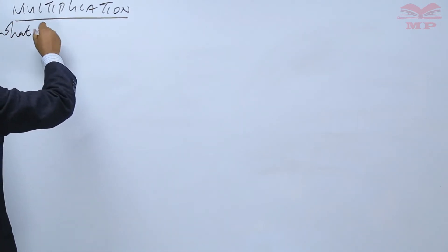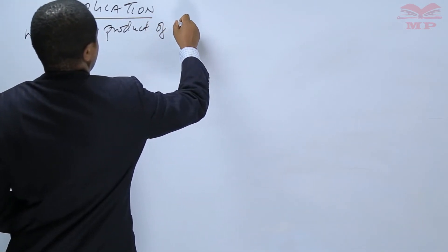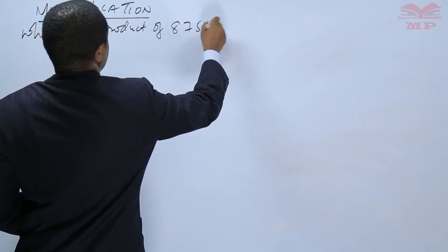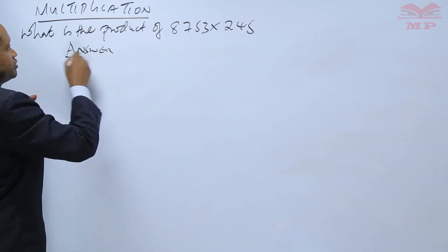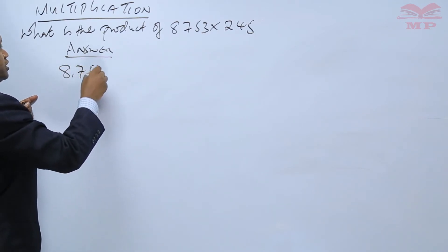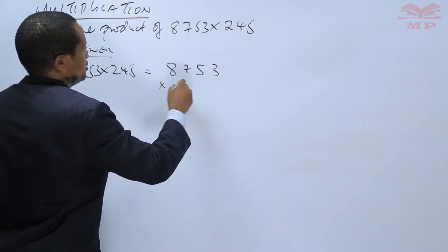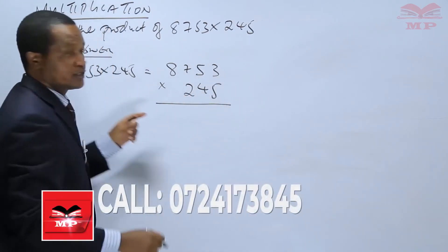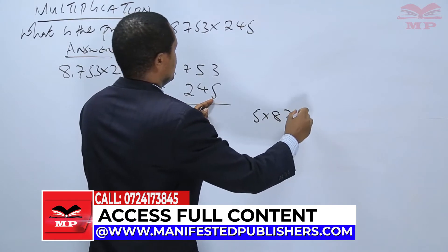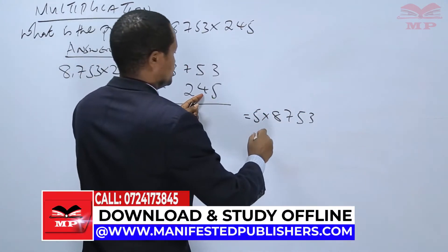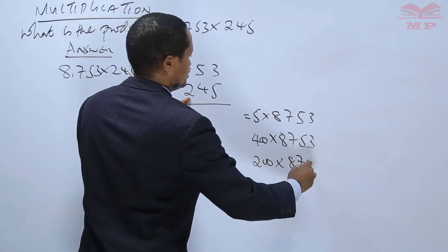What is the product of 8,753 times 245? We set up 8,753 times 245. We will multiply 5 times 8,753, then 40 times 8,753, and next 200 times 8,753.